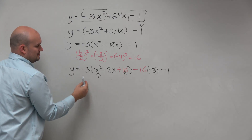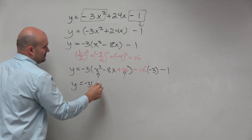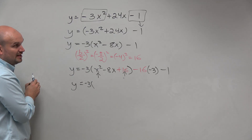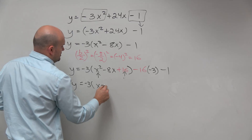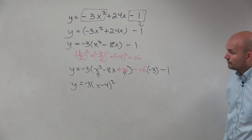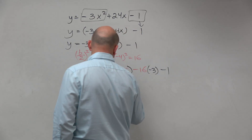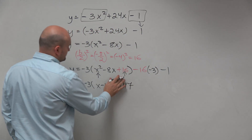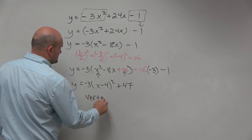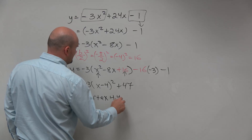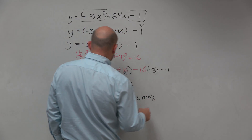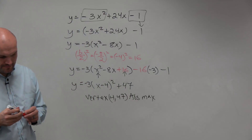Now let's go back to where we are. Y equals negative 3 times a perfect square trinomial. What two numbers multiply to give you 16 and add to give you negative 8? That gives us x minus 4, squared. Then negative 16 times negative 3 is a positive 48, and 48 minus 1 is 47. So my vertex is (4, 47), and that is an absolute maximum because the graph opens down.